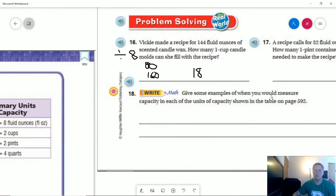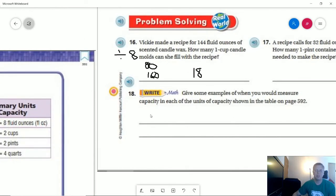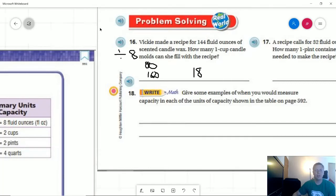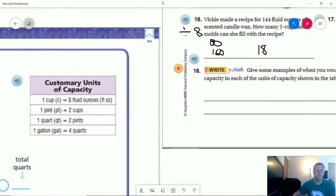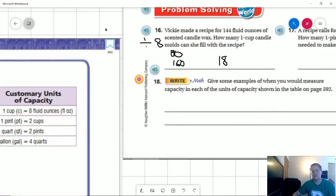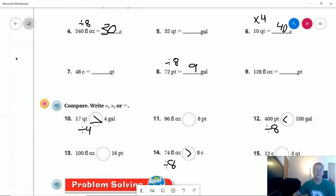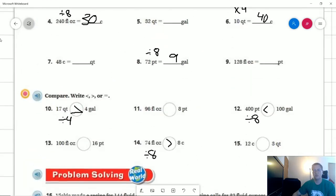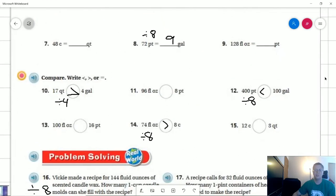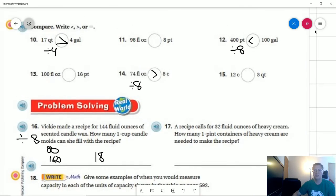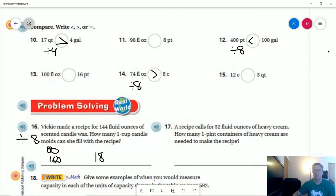Gallons, again, would probably be water or milk. Those would be things that we would measure that capacity. Like for instance, a gallon of milk, we're probably not going to measure that whole thing out, but we might use gallons as part of making a soup or something like that. We need a certain number of gallons or quarts of water to do something.